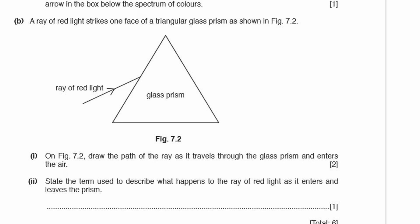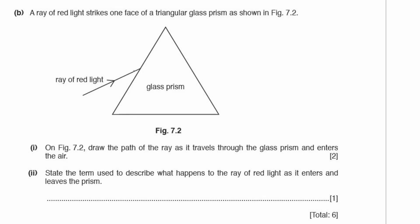Part B: a ray of red light strikes one face of a triangular glass prism. Draw the path of the ray through the prism and as it enters the air. As it enters the glass it slows down, bending towards the normal line. As it leaves, it speeds up, bending away from the normal line. When you're doing an exam, use a ruler. The term used to describe what happens to the ray is refraction — changing direction because it's changing speed.